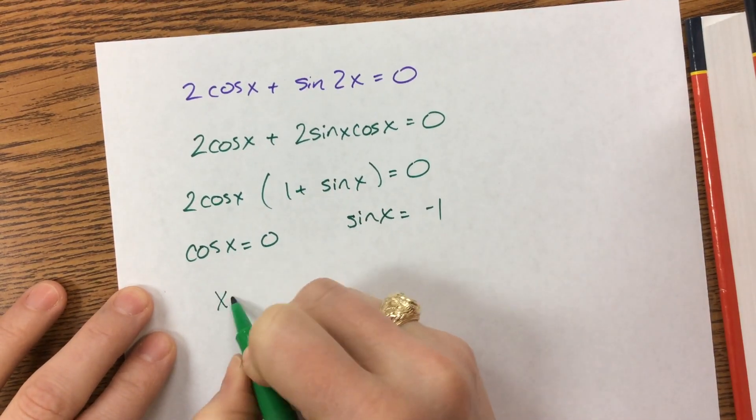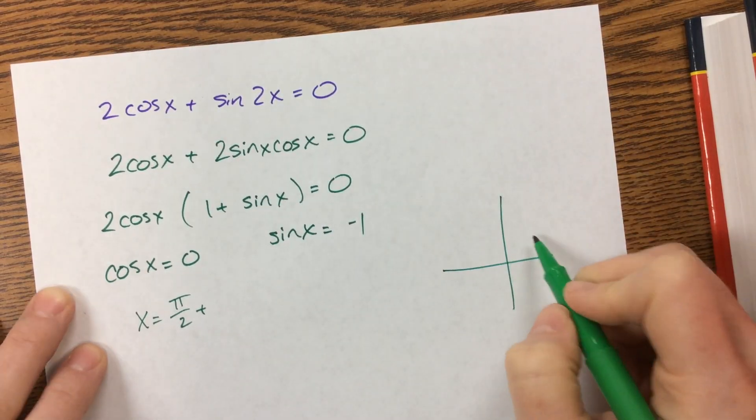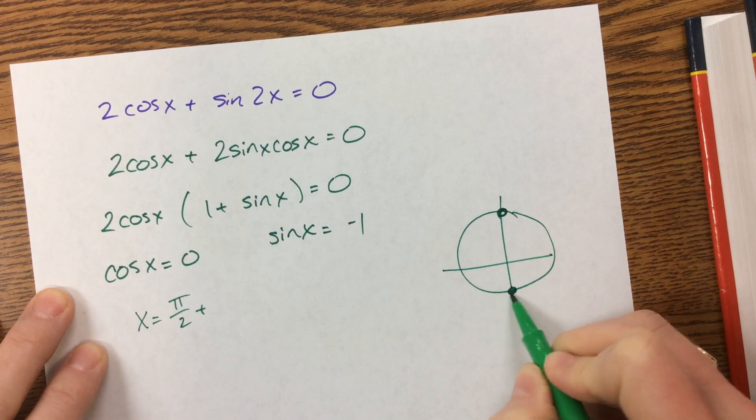Cosine equals 0 at pi over 2. Well, okay, so here's our unit circle. Cosine equals 0 here and here. Sine equals negative 1 right here.